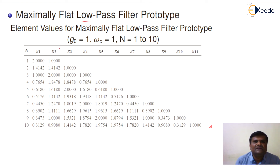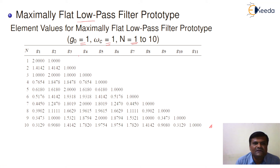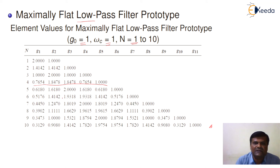This table shows the different element values for the maximally flat low-pass filter. We know that G0 equals 1 and the cutoff frequency equals 1. Here, we select the filter order n, from 1 to 10. For example, if we require a fourth-order filter, these are the values of the different coefficients used for filter design. According to the order selected, you choose the appropriate component values.